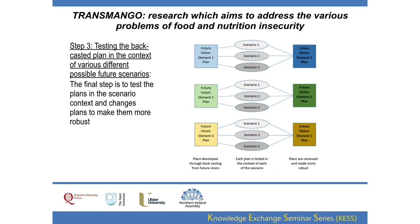We're testing the plans in the context of these different scenarios. Future vision, element one — for example, an integrated food policy — we made the plan, we backcasted it, and then we tested it in the context of the first scenario. We asked: if we wanted to make our plan work in this scenario, would it work? What would we need to change? Then we looked at the second scenario and asked the same thing, and then the third. We went back and embedded all of those changes into our plan to create a more robust plan.